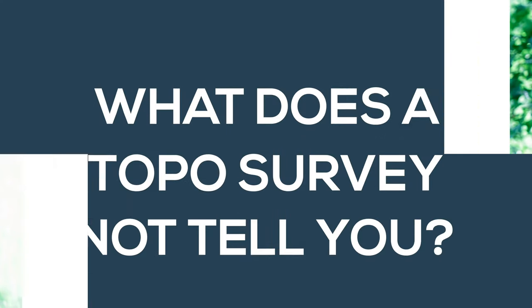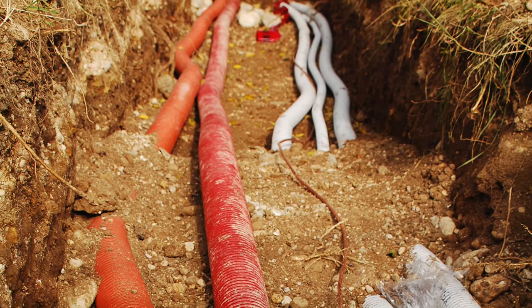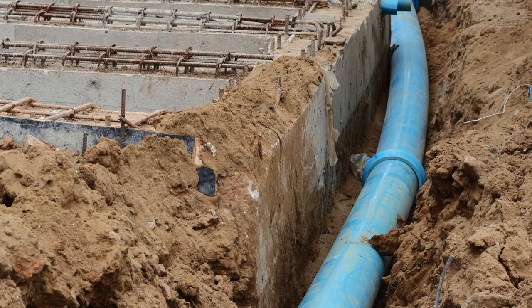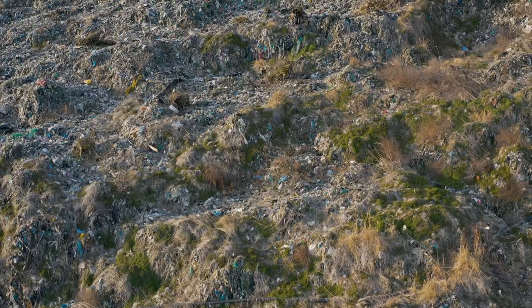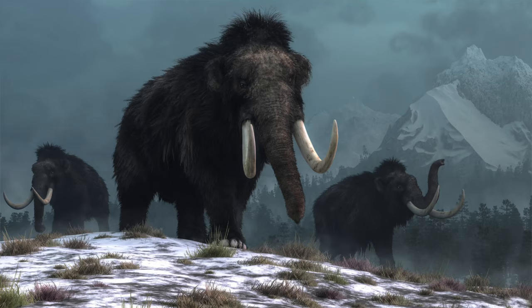Anything can be engineered — it's just a matter of how much you want to spend. As for what a topo survey can't tell you: it only captures what's visible on the ground. If underground utilities aren't marked, we can't locate them. It won't reveal things buried years ago, like an old barn that was tipped over and covered. It also won't give you environmental data — pollution in the water or soil, septic tanks, or underground gas tanks. If it's not marked, you'll never know.